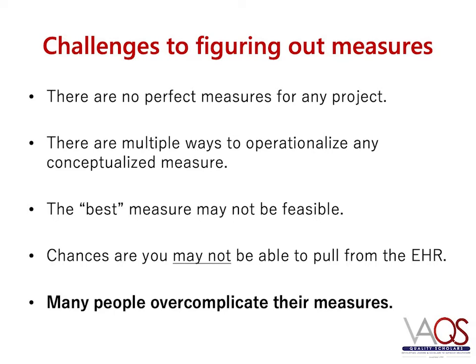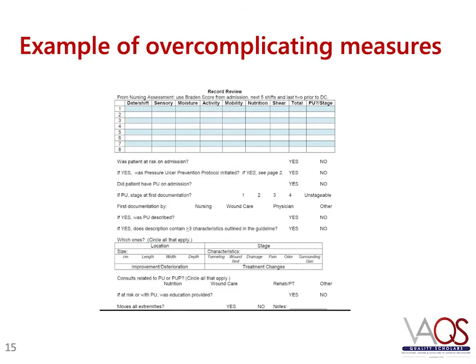Finally, many people overcomplicate their measures. You need to identify the minimum number of measures that will allow you to make good decisions about your improvement work, and no more. On a project working on pressure ulcer prevention at the Birmingham VA, we developed a two-page audit tool to do a deep dive into the pressure ulcer prevention process at the facility so we could assess baseline performance. We did 50 random chart audits, and each audit took us 30 minutes to complete.